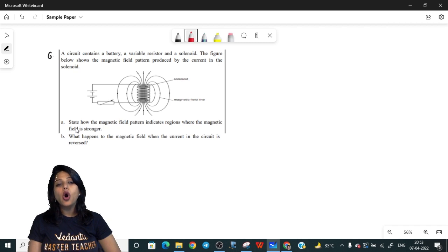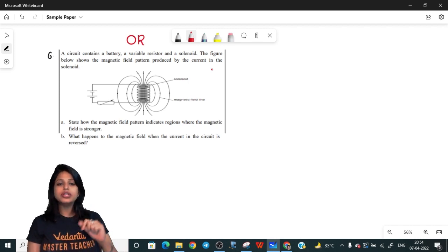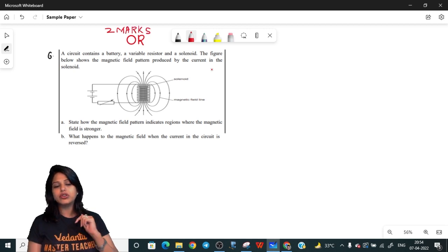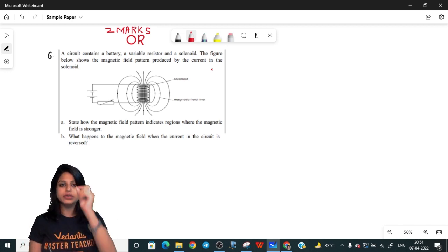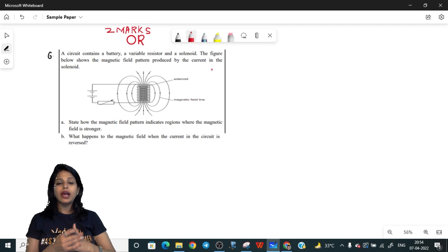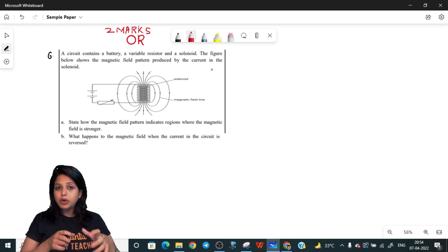Let's get quickly started with question number six that is from our sample paper, which is an OR question. This is a choice question that you got in your exam with the same marks as the previous question. It may be more easy or more difficult. How to pick which one to answer? I'll tell you at the end. Let's read the question first and make sure that while you read you are understanding the question in one go.